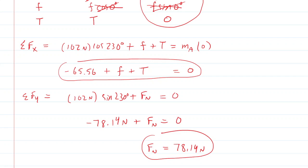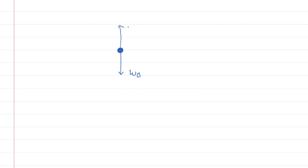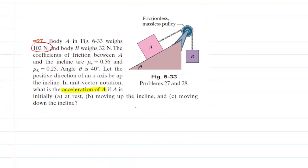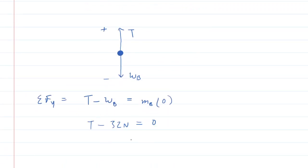The free body diagram of block B is easier — we have the weight of block B pulling it downward and the tension force holding it upward. Taking the sum of forces in the y-direction, with tension as positive and weight as negative, we get T minus the weight of block B equals mass of block B times acceleration. Block B is also not moving since it's connected to block A, so acceleration is zero. The weight of block B was given as 32 newtons. Plugging that in, the tension is 32 newtons.